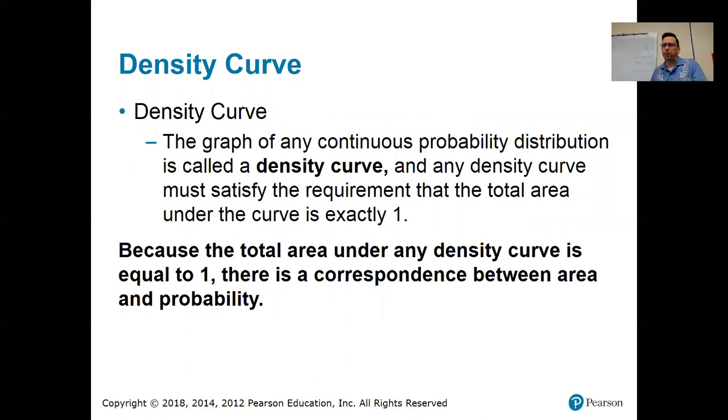The graph of any continuous probability distribution is called a density curve. So this is a density curve. And any density curve must satisfy the requirement that the total area under the curve is exactly one. So this is the continuous version of all your probabilities have to add up to one. So remember all throughout this chapter, that area and probability mean the same thing. So find your probability, find the area under the curve.